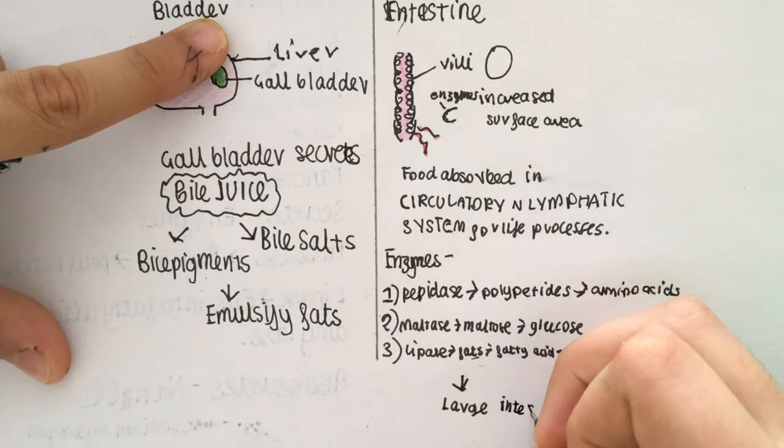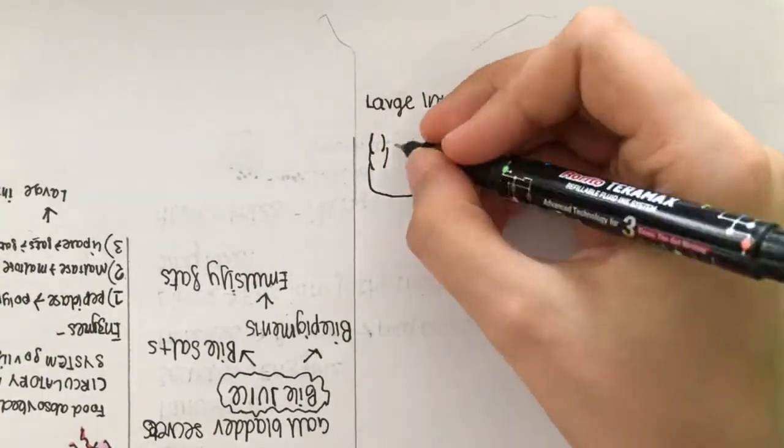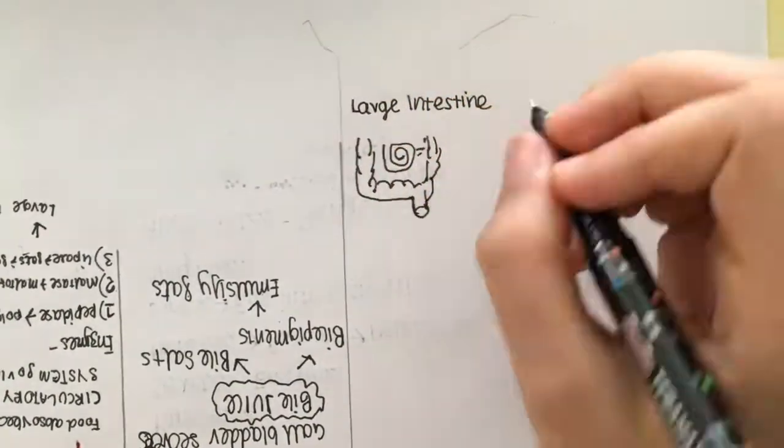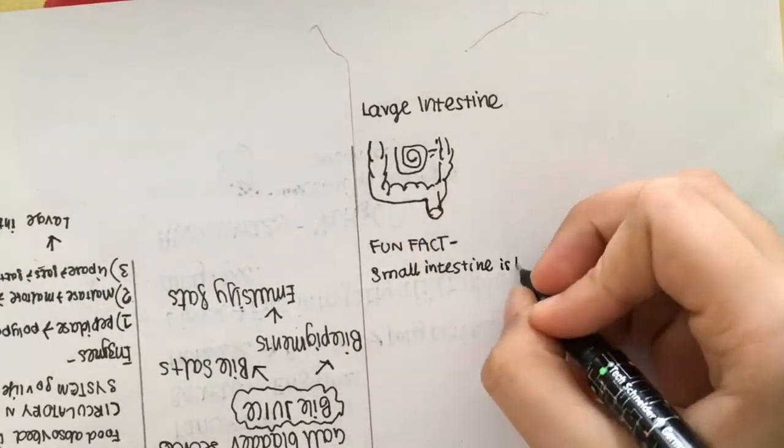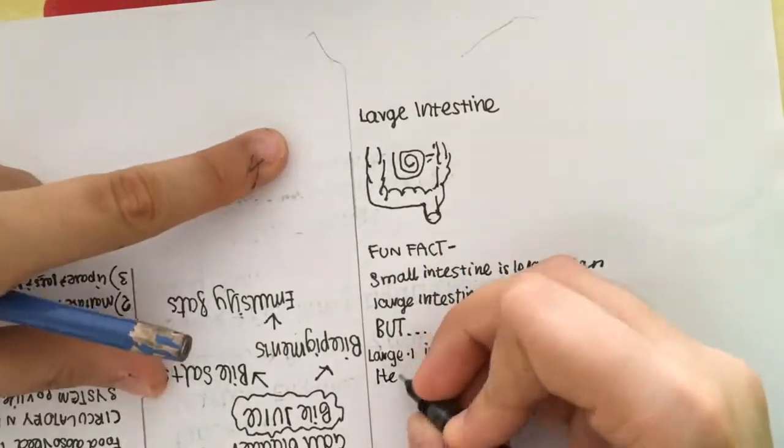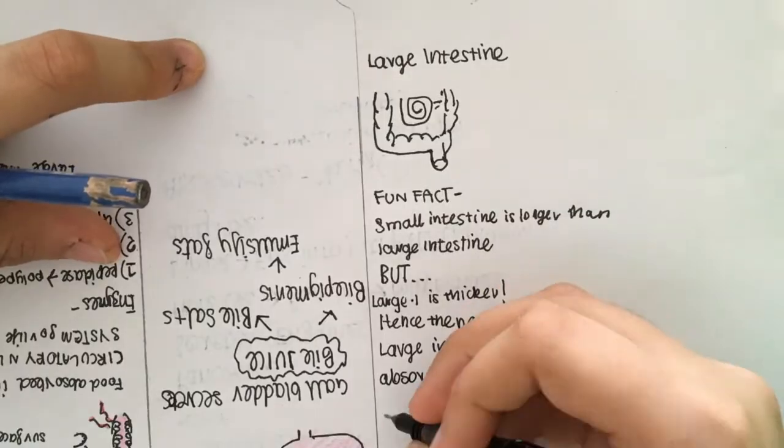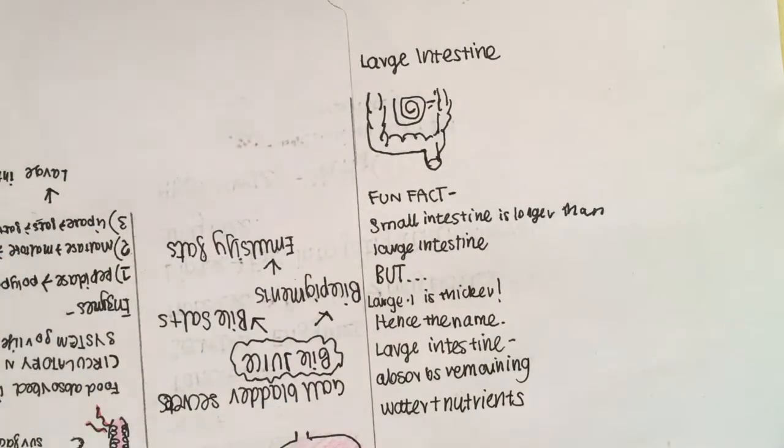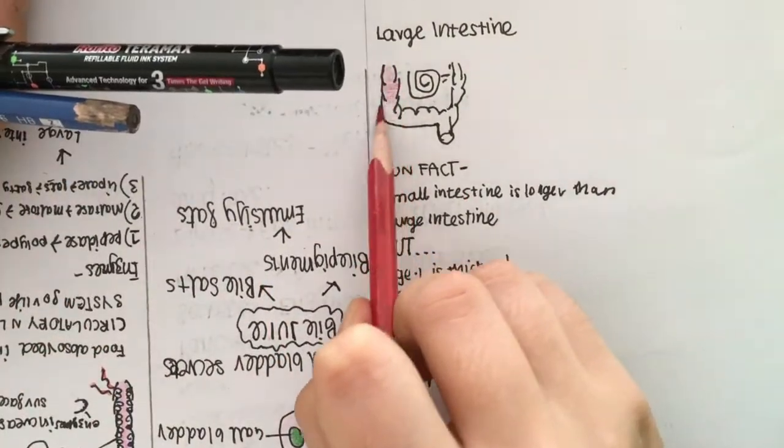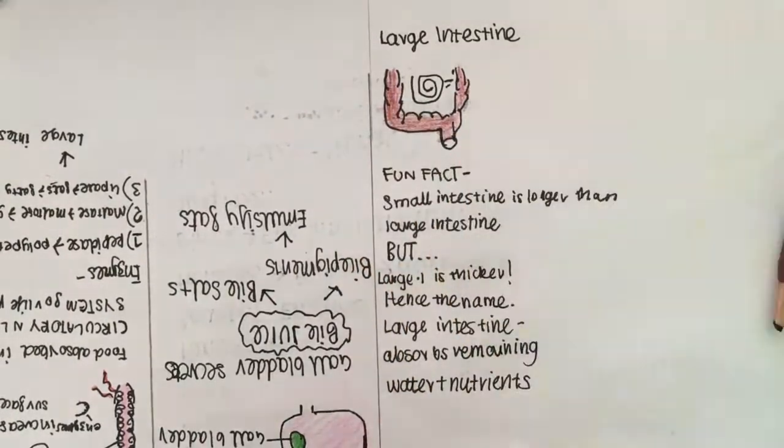Then the food is taken into the large intestine. Here's a fun fact for you: the small intestine is actually longer than the large intestine, but the large intestine is thicker, hence its name. The large intestine absorbs the remnants of the food and absorbs water before excretion.